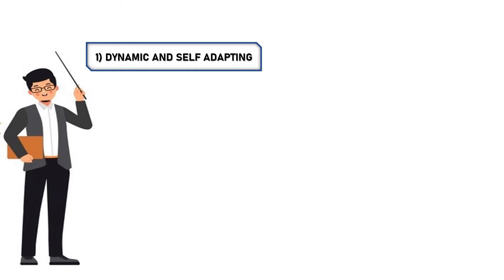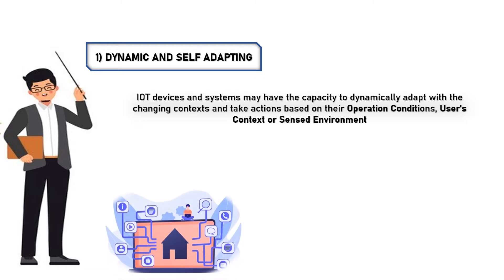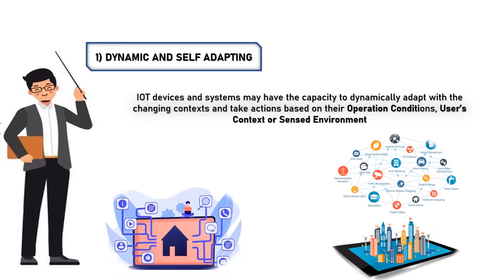1. Dynamic and self-adapting. In this type of characteristic, IoT devices and systems may have the capacity to dynamically adapt with the changing contexts and take actions based on their operation, conditions, and user's context or sensed environment.